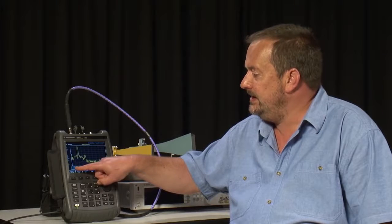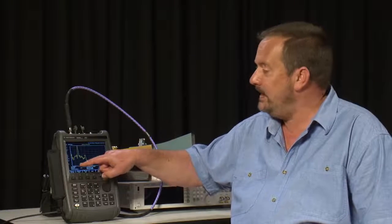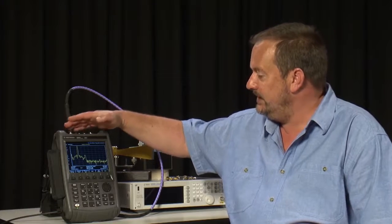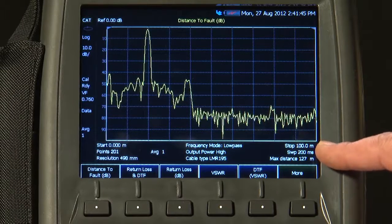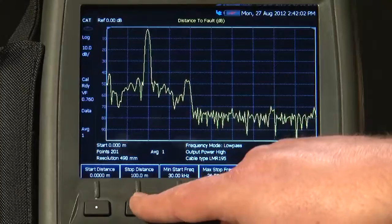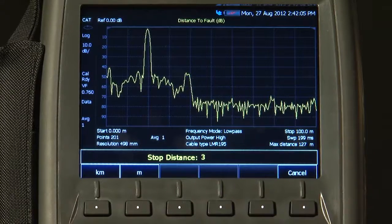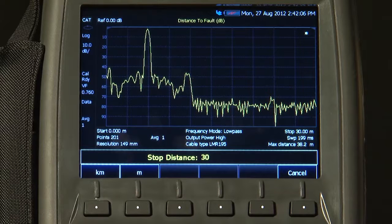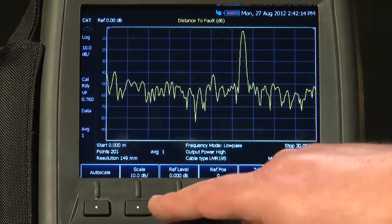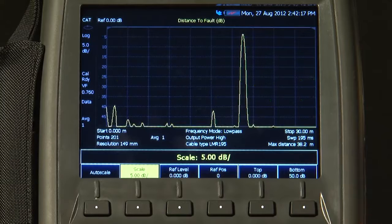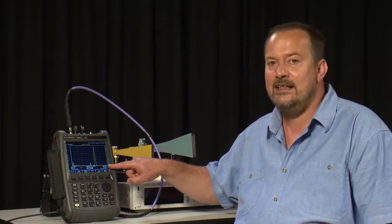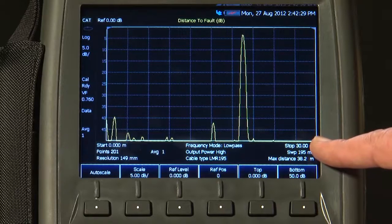The Start Distance is 0 meters. That is the calibration plane, which here, I am just using the CalReady again, is at this point here on port 1 of the FieldFox, and the Stop Distance is 100 meters. Now, I know this cable run is less than 30 meters, so if I press the Frequency Distance button and select Stop Distance, I will type in 30 meters. And the other thing I will do is change the Scale per Division to 5 dB per Division. Now, on the display, we are sweeping from 0 meters to 30 meters, and we can clearly see the reflections at the various points along the cable.